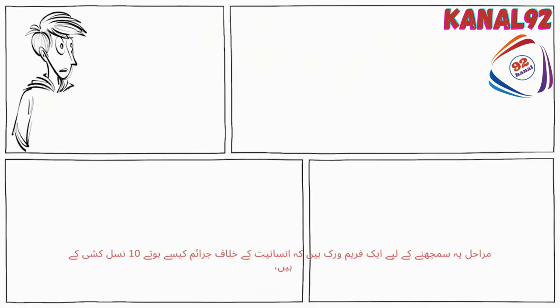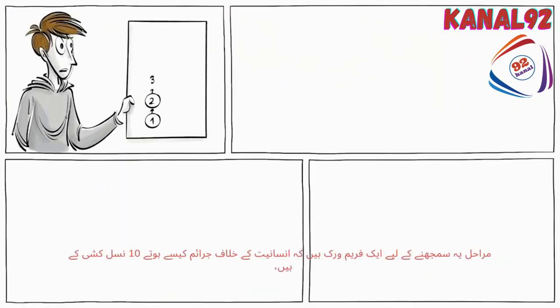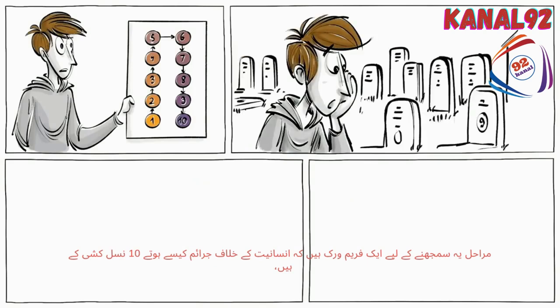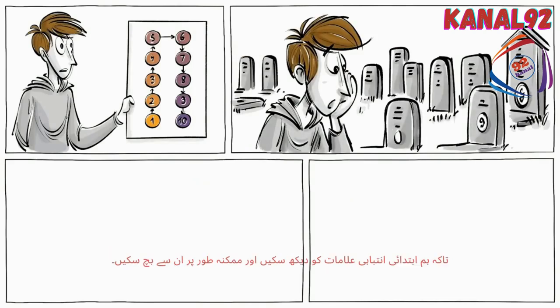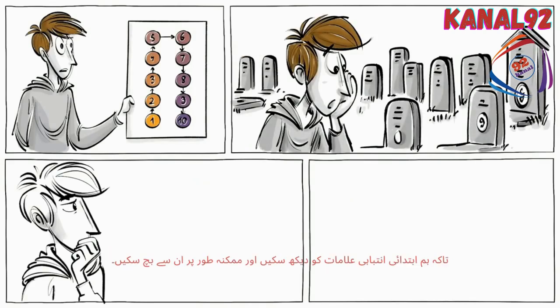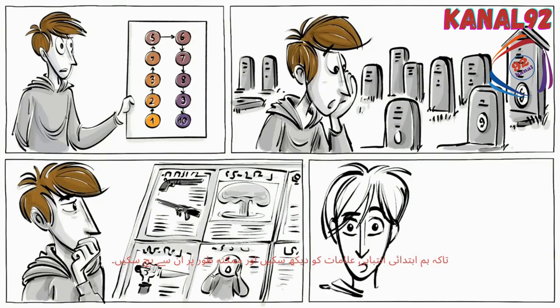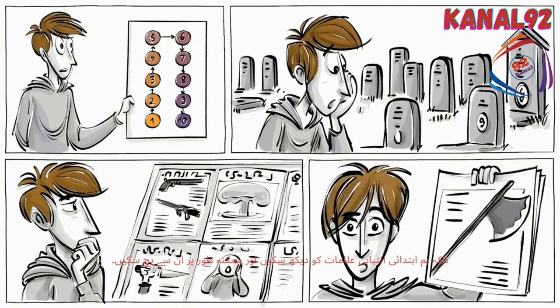The 10 stages of genocide are a framework for understanding how crimes against humanity happen, so we can spot early warning signs and potentially prevent them.